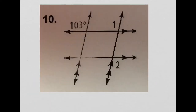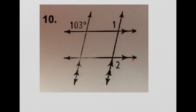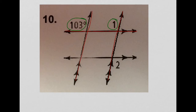Now for number 10, we are still finding the measure of angle 1 and angle 2. There's extra work here because we're dealing with two pairs of lines. The 103-degree angle and angle 1 share a transversal, and those two lines are marked as parallel — notice the double arrows. We can ignore the third line for now since these two angles don't touch it. The 103-degree angle and angle 1 are corresponding angles — same side of the transversal, corresponding positions on the parallel lines — so they are congruent. The measure of angle 1 is 103 degrees.